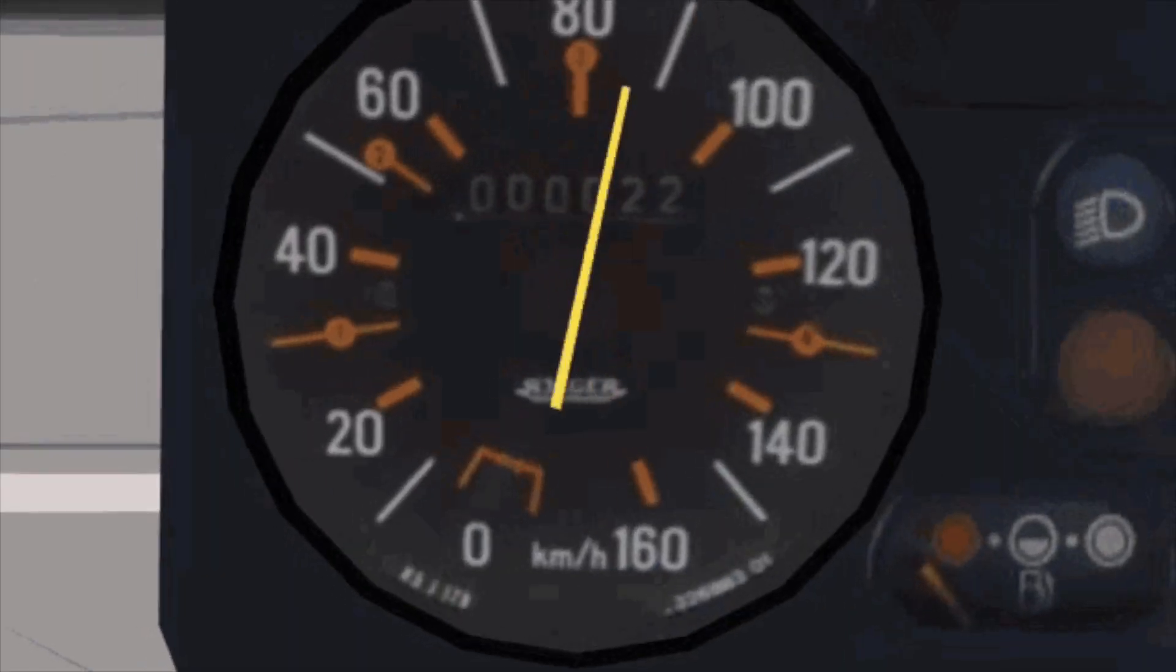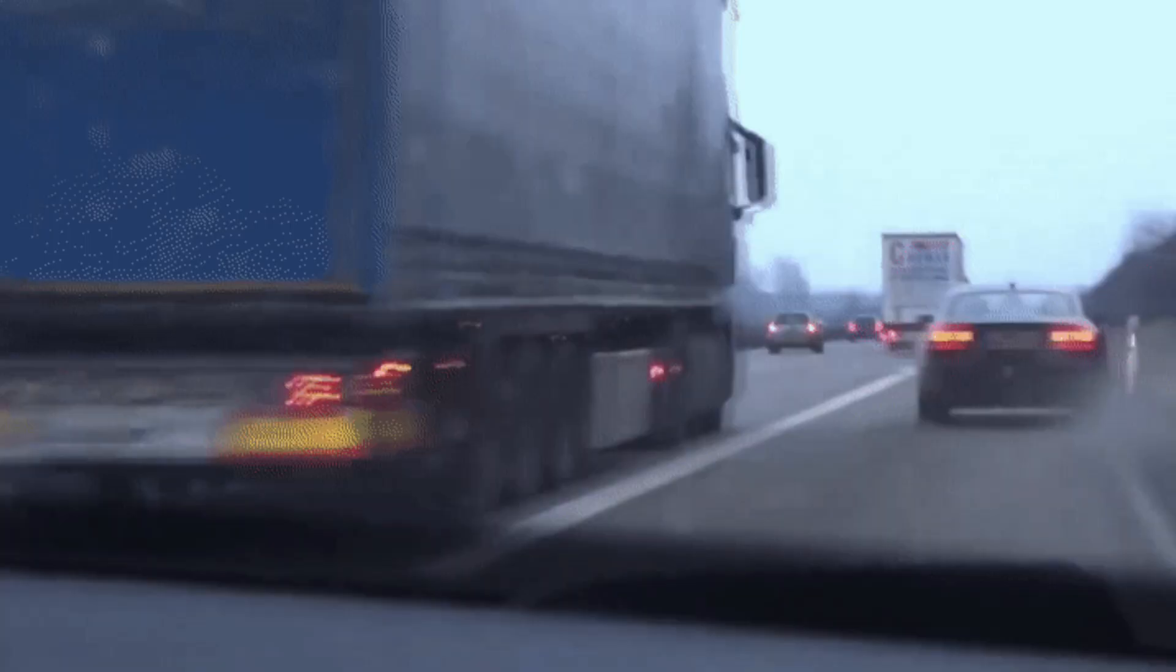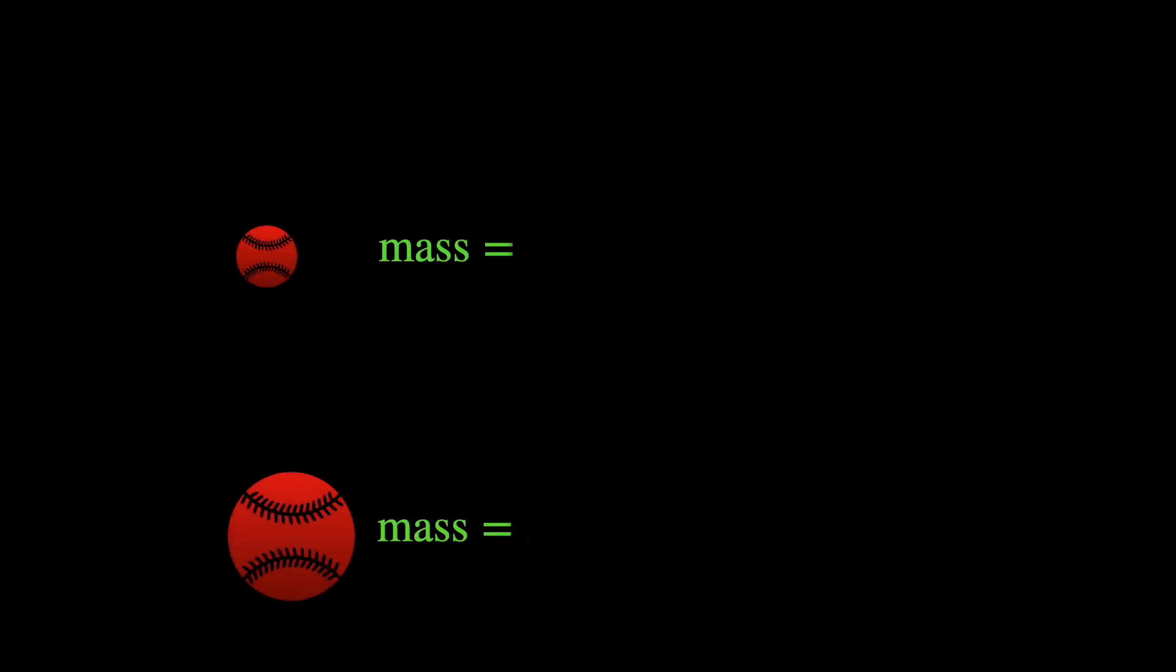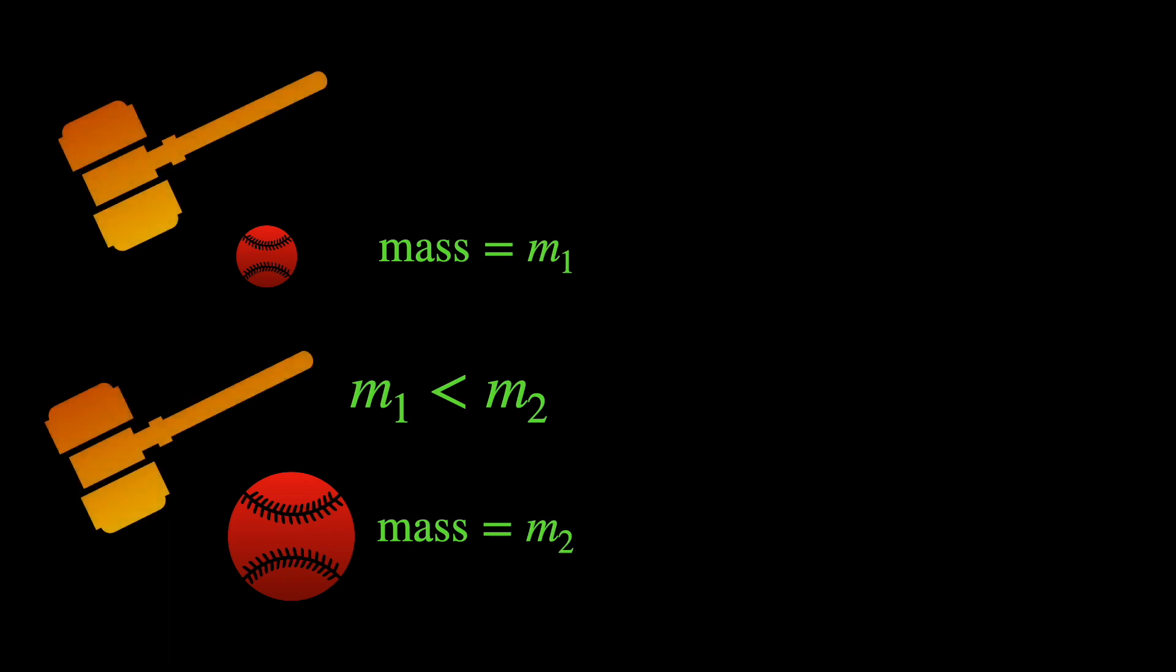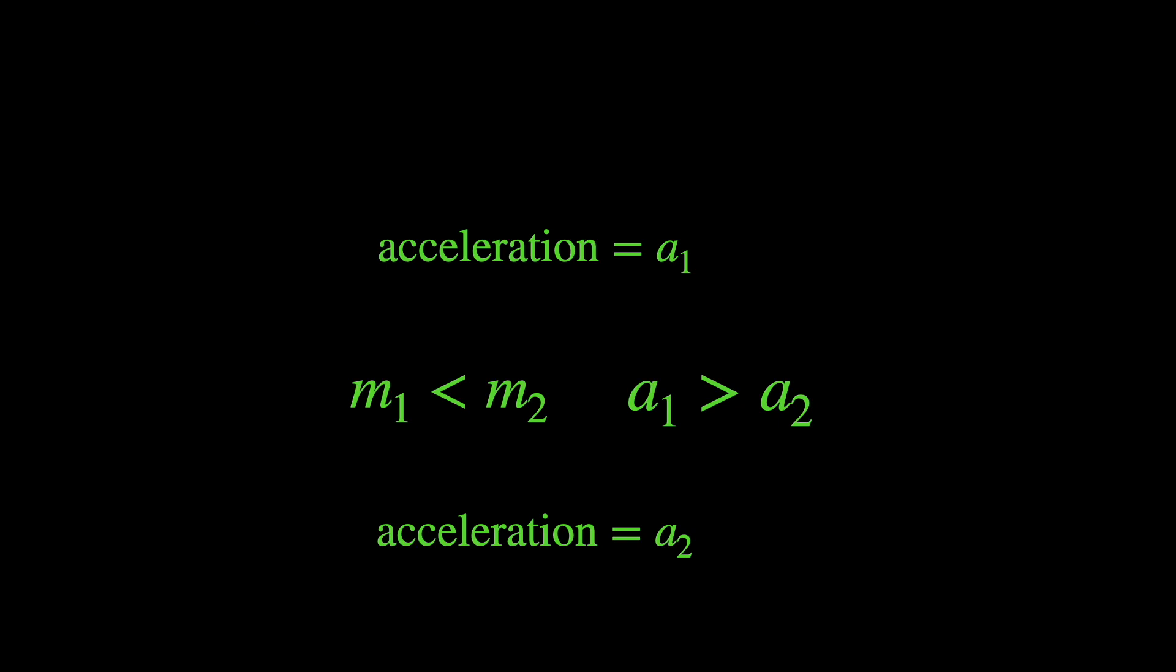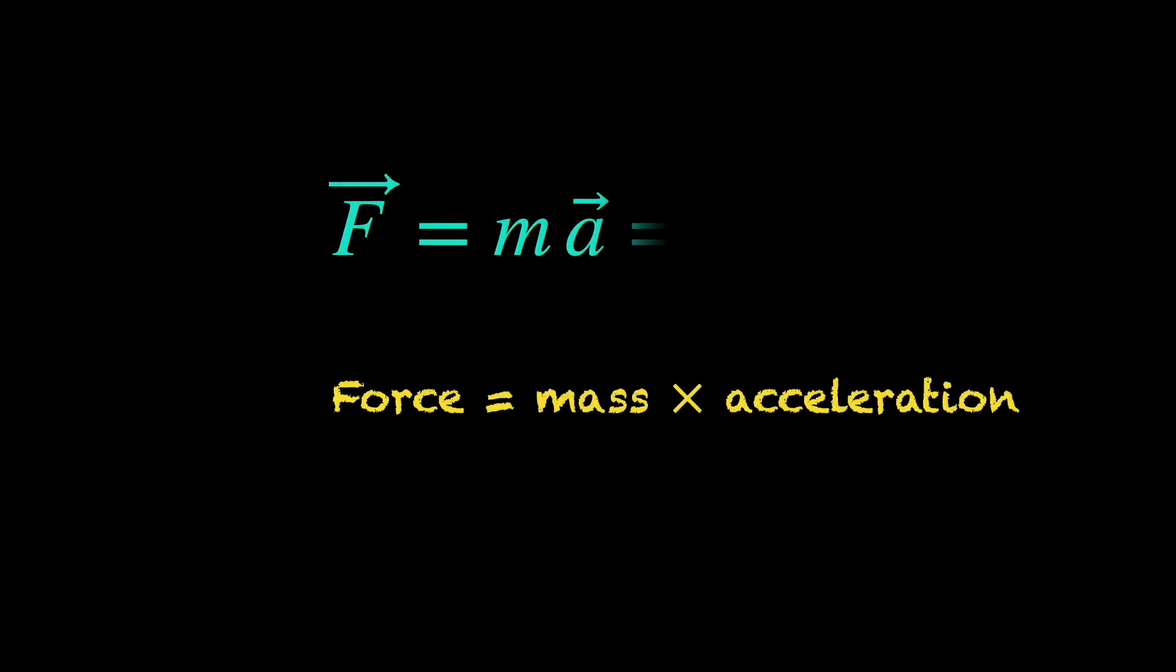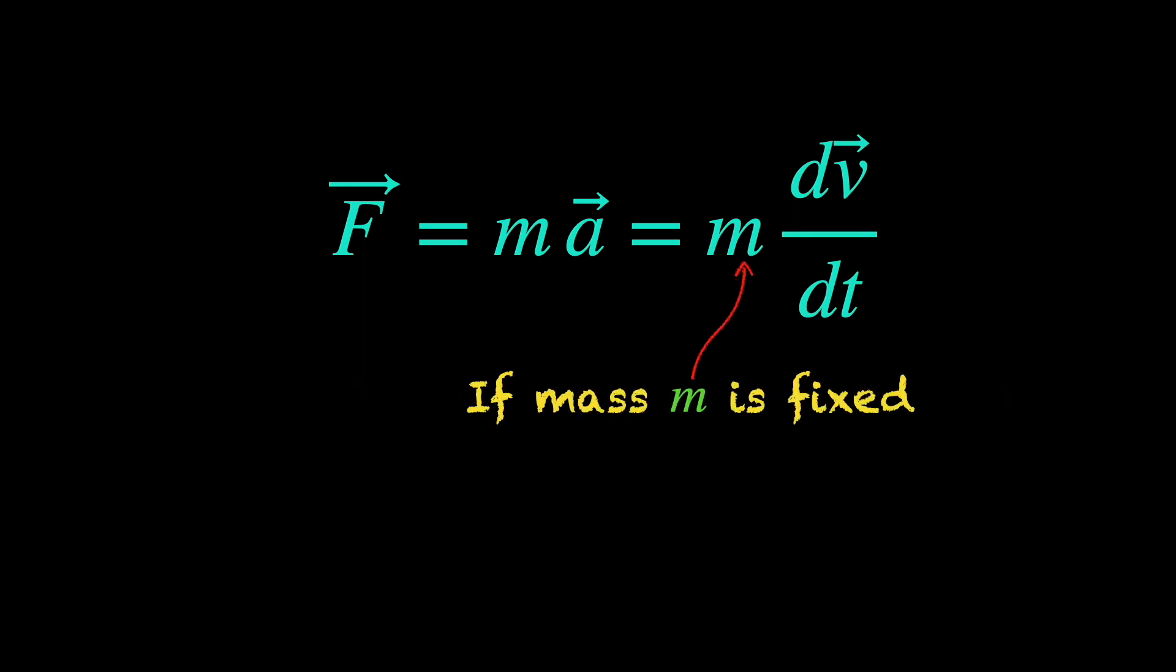When some force is applied to an object, all we see is it changes velocity with time or accelerates. Moreover, for a given applied force, heavier objects undergo lesser acceleration and lighter objects accelerate more. These observations led Newton to his second law of motion quantifying force as mass times acceleration or m dv dt. Now, if the mass of the particle is fixed, which is usually the case, we can write m dv dt as d dt of mass times velocity.